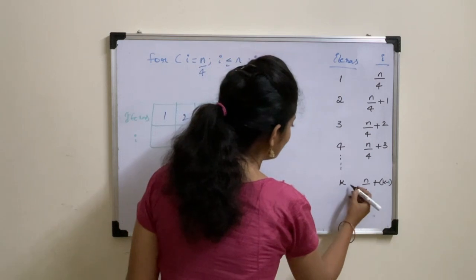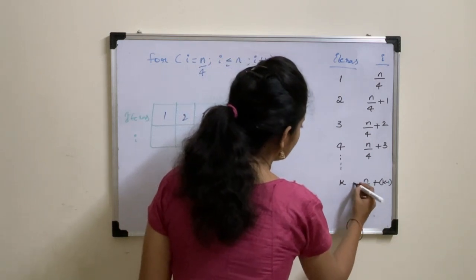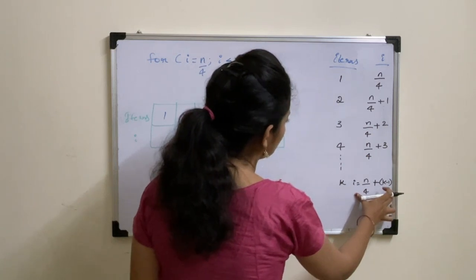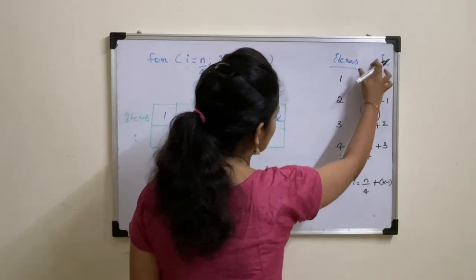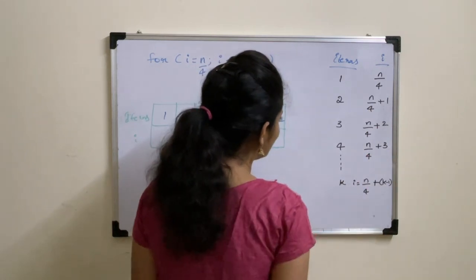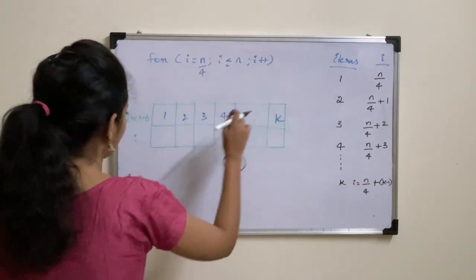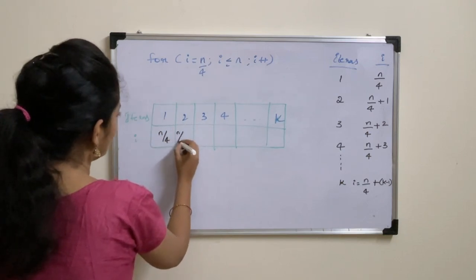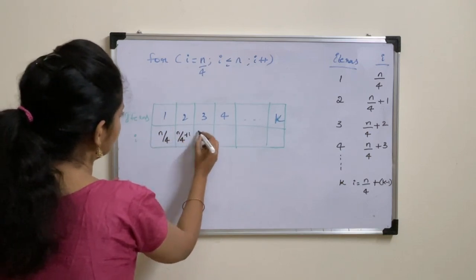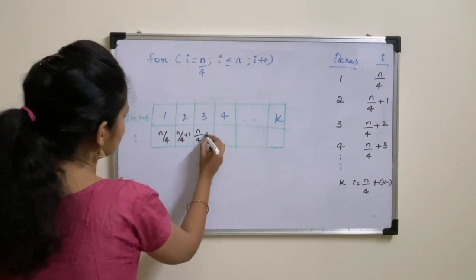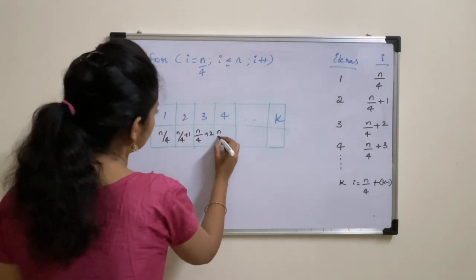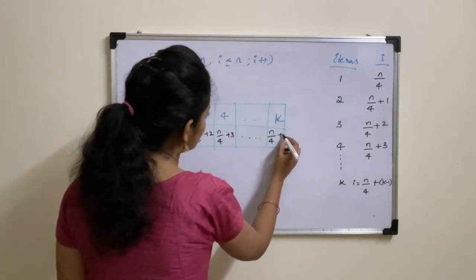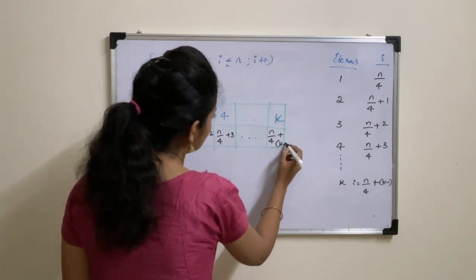So this is nothing but i equal to N by 4 plus K minus 1. During this fourth iteration, i value equal to N by 4 plus 3. So just write them in this table: N by 4, N by 4 plus 1, N by 4 plus 2, N by 4 plus 3, and so on, N by 4 plus K minus 1.